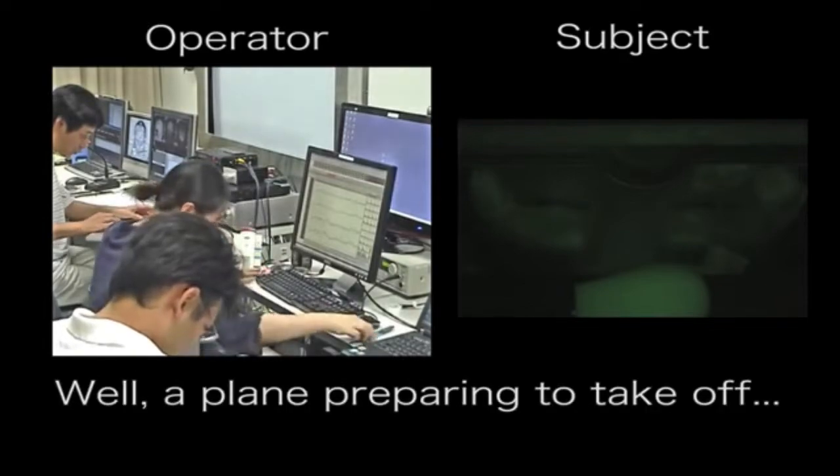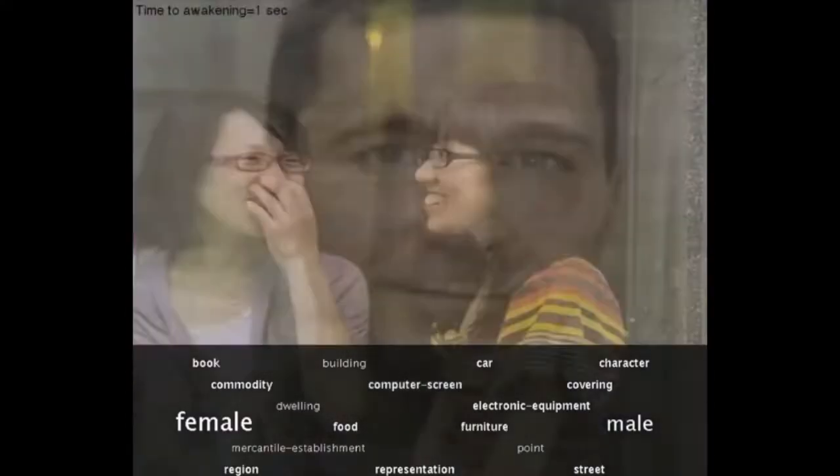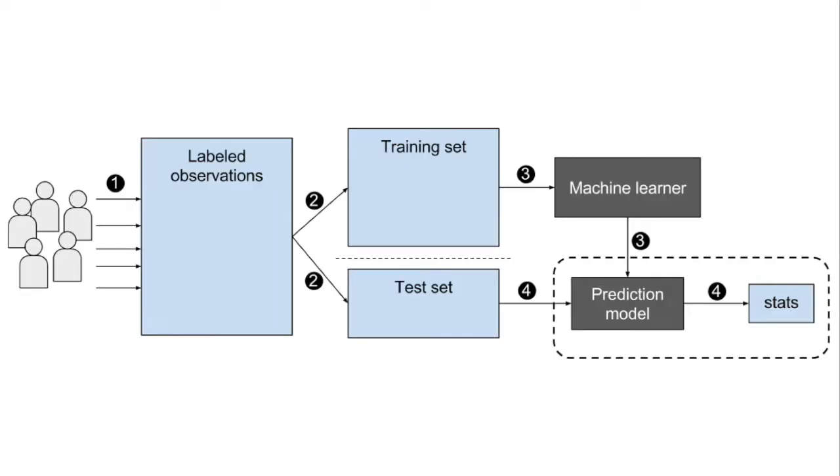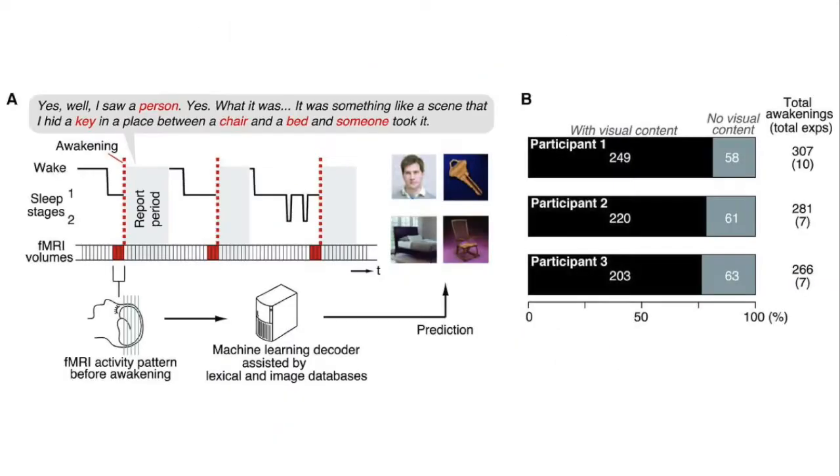There were three participants, and they woke them a total of 200 times. Similar to the last experiment, they also asked subjects to look at a bunch of images while scanning their brains with fMRI, but this time they used supervised machine learning, specifically something called linear support vector machines. Then they took the brain scans from when the subjects were dreaming and fed them into the machine learning algorithm, which outputted images that it thought the subjects were dreaming.